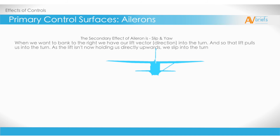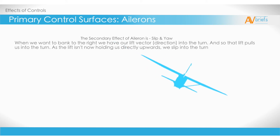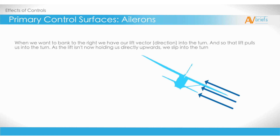Another secondary effect of aileron is slip and yaw. When we want to bank to the right, we have our lift vector pointing into the turn, and so that increased lift pulls us into the turn. As the lift is not holding us directly upwards and it's pulling us across as well now, we slip into the turn. There is now a new sideways component of relative airflow due to slipstream. This has the effect of pushing into the side of the airplane, and this sideslip force has the most effect on the tail, resulting in a yaw.